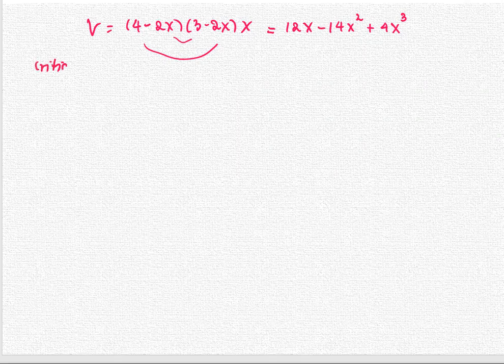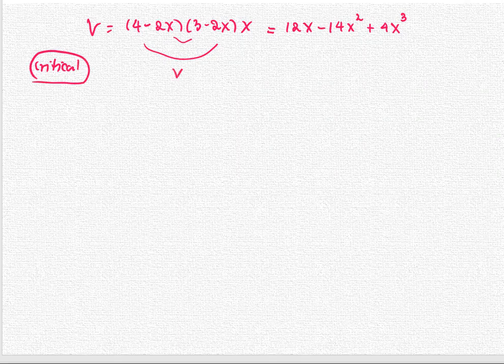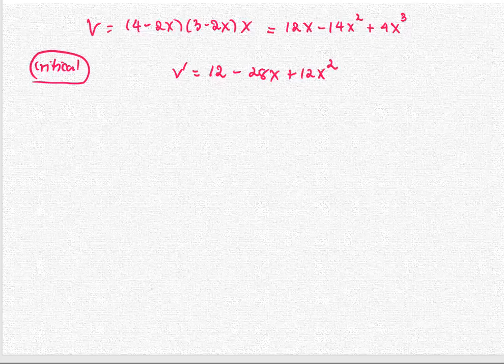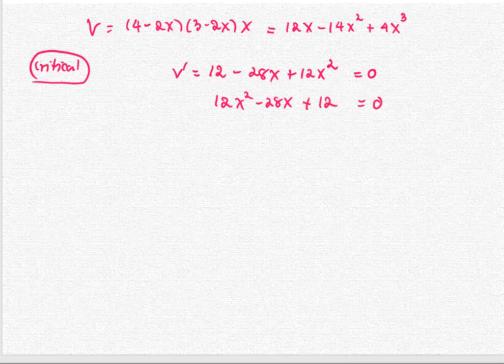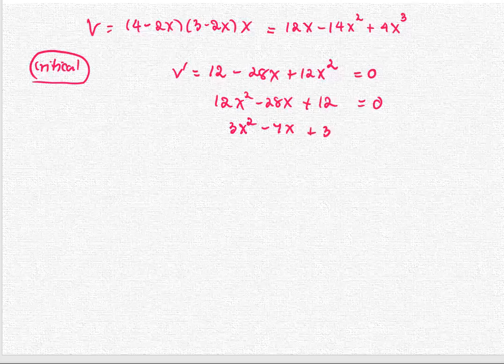To find the critical numbers, we look for V prime. The derivative of V is 12 minus 28x plus 12x squared, and we set it equal to zero. We write it in better form as 12x squared minus 28x plus 12. Dividing all by 4, we get 3x squared minus 7x plus 3 equals zero.